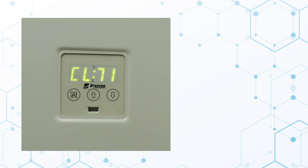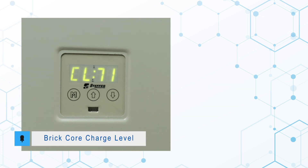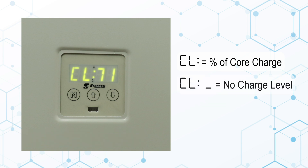Press the up arrow again. The display will show CL and a number, indicating the current percentage of heat stored in the brick core. CL underscore represents a charge level lower than the minimum core temperature, and CLF represents a full core charge level.